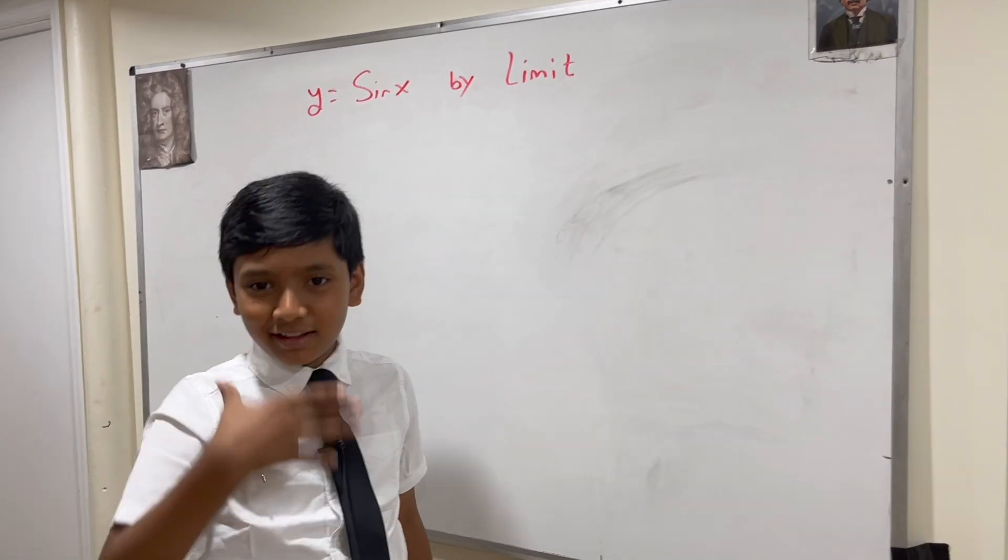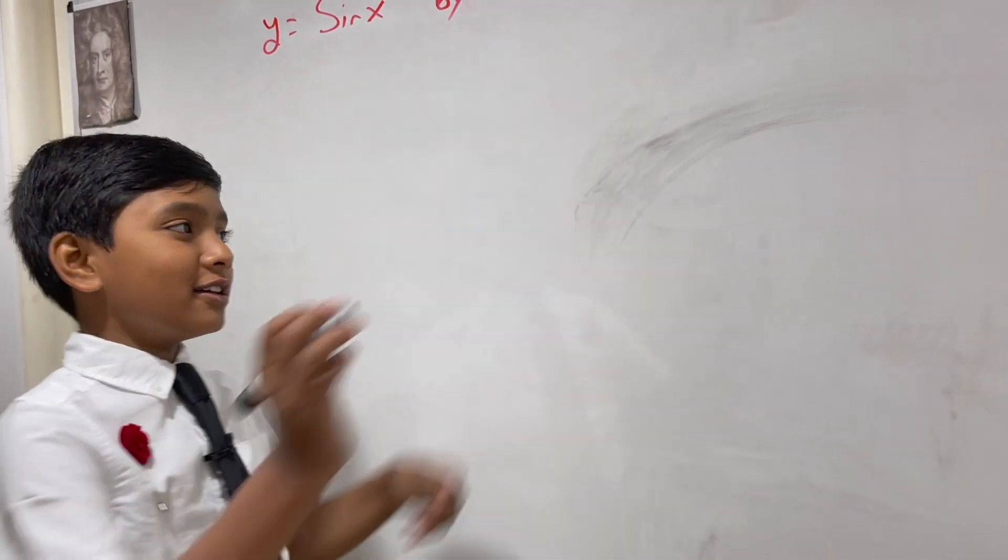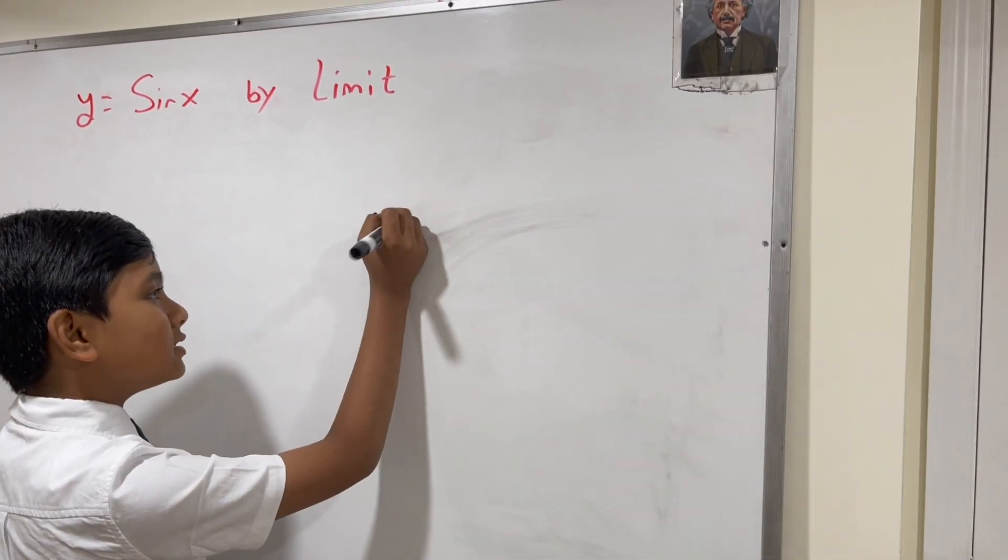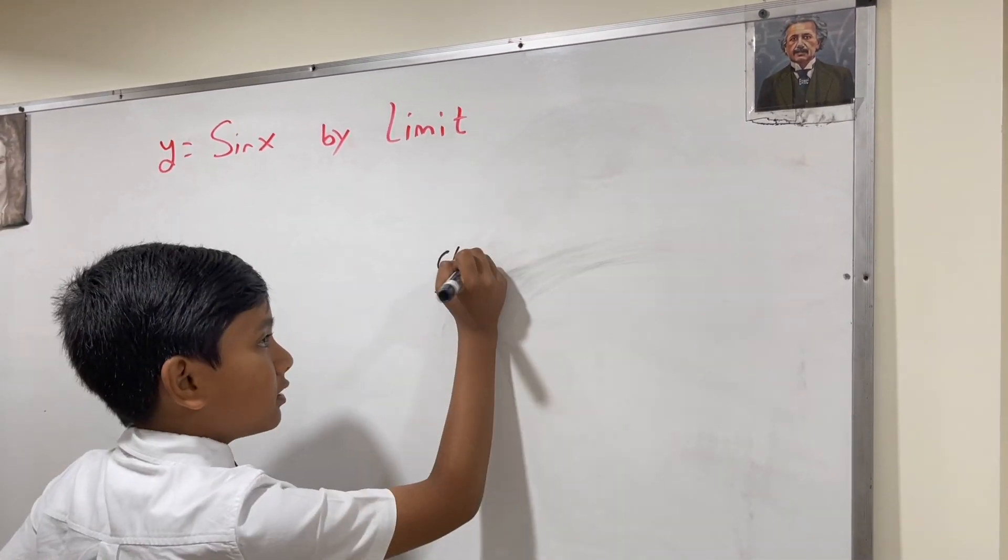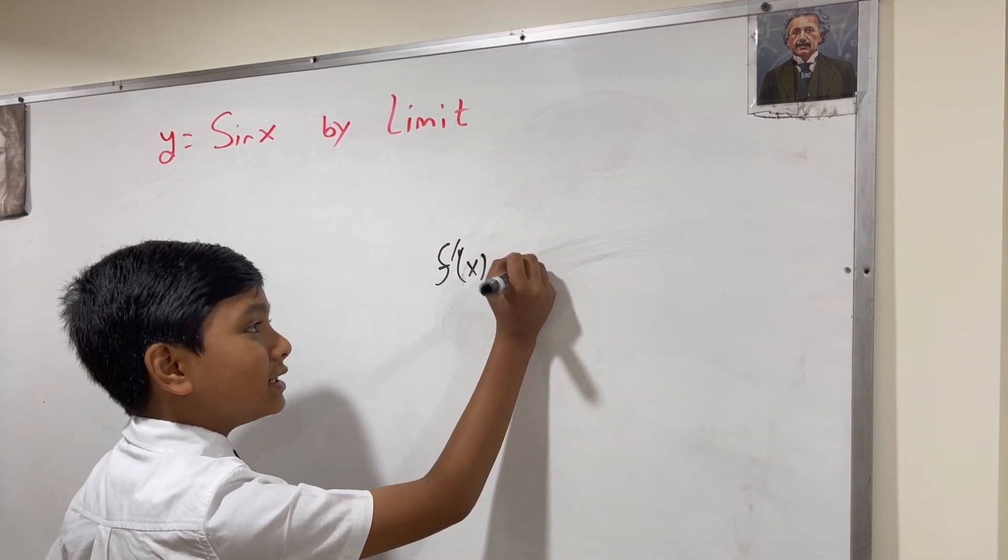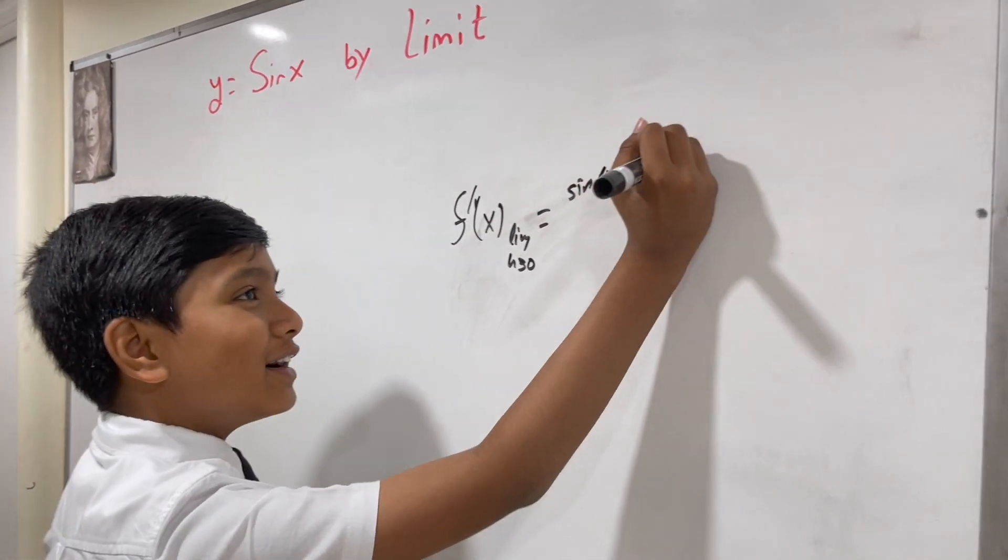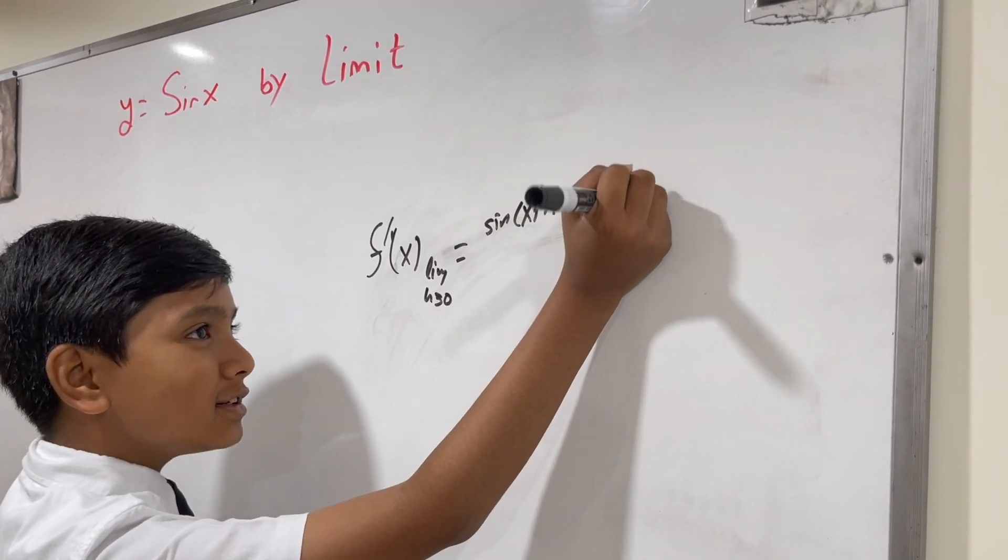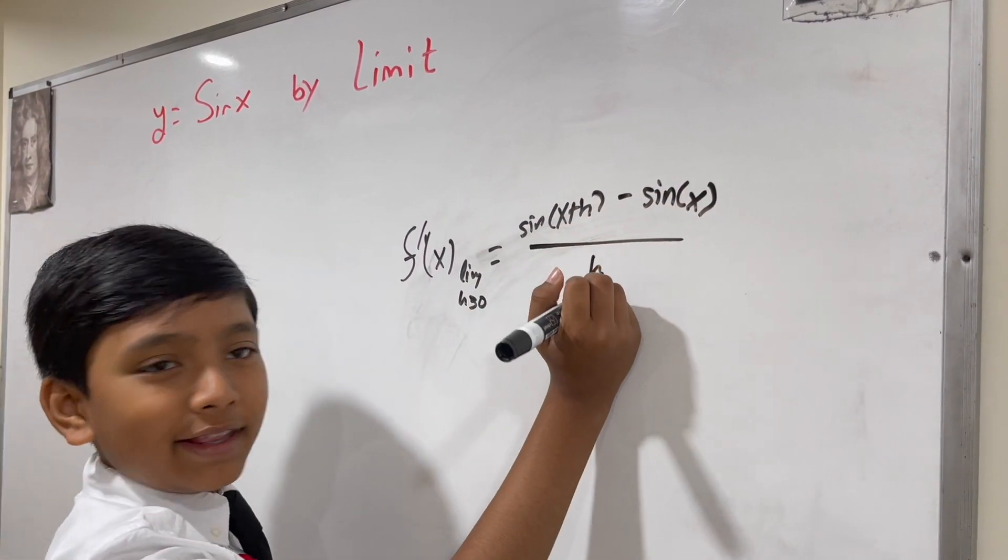Let's just get started. f prime of x, you know the problem already, look up at the board. f prime of x, limit as h approaches zero is sine of x plus h minus sine of x over h.